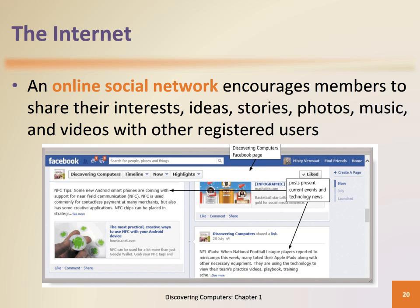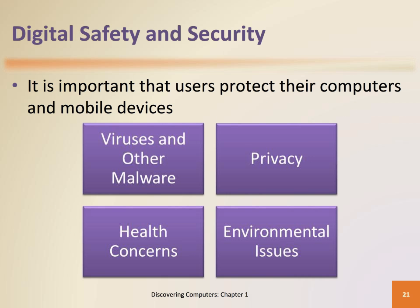Facebook is one example of an online social network. It is important that computer and mobile users are aware of digital safety and security issues. A virus is a potentially damaging computer program; a worm is a computer program that copies itself repeatedly; and a trojan horse is a program that hides or looks like a legitimate program. Computer viruses, worms, and trojan horses are classified as malware, short for malicious software. To protect your privacy, do not share information that would allow others to identify or locate you, and do not disclose identification numbers, usernames, passwords, or other personal security details.